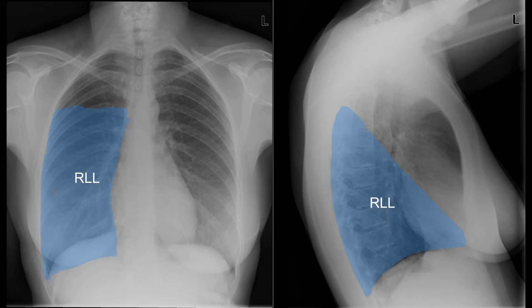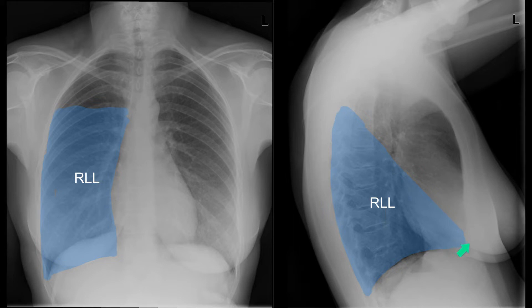On the PA radiograph, the right lower lobe occupies a significant area on the two-dimensional film. The lateral film sometimes shows the oblique fissure, which runs from about T4 to the anterior corner of the chest. In a right lower lobe collapse, the collapse occurs towards the mediastinum and towards the posterior chest wall.